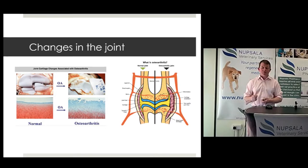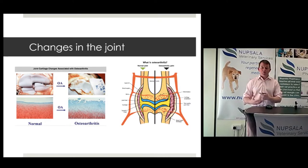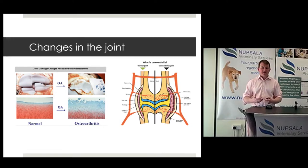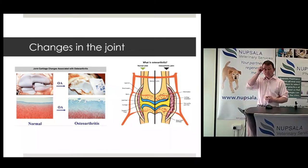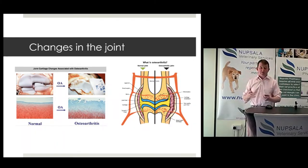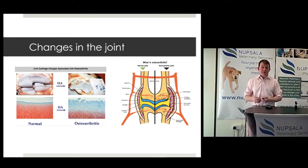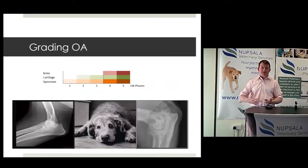It's important to recognize that osteoarthritis is not just a cartilage issue and not just a bone remodeling issue — it is very much a soft tissue issue. People often overlook how affected the soft tissues are in this disease process. When we talk about soft tissues, I'm talking about the joint capsule, the synovium, and the synovial tissues.